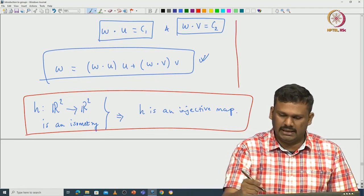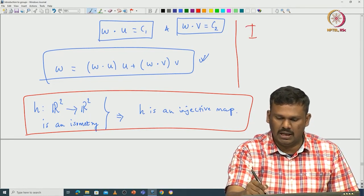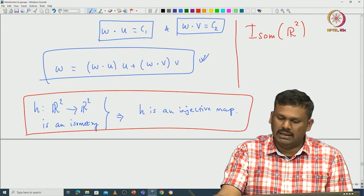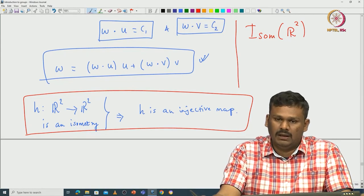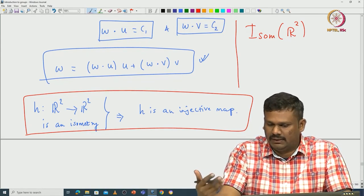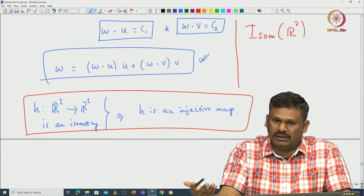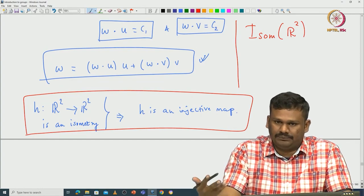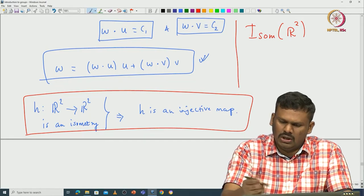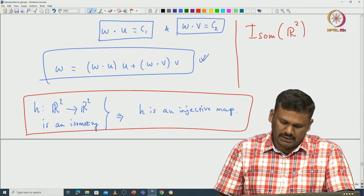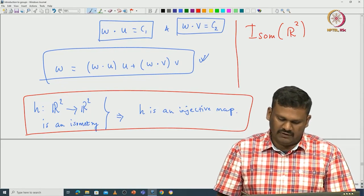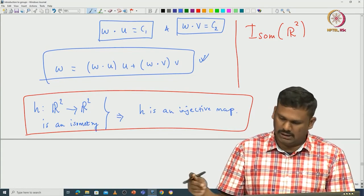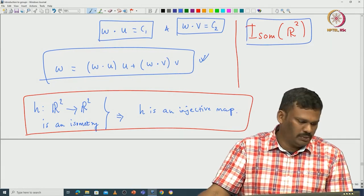We want to understand the set of isometrics, which we denote ISOM of R2. Ultimately, we want to prove that the isometrics of R2 form a group. To prove that, we first need to find the inverse of a given isometry, which requires proving that any given isometry is bijective. Without actually using the classification of isometrics, this becomes much harder.